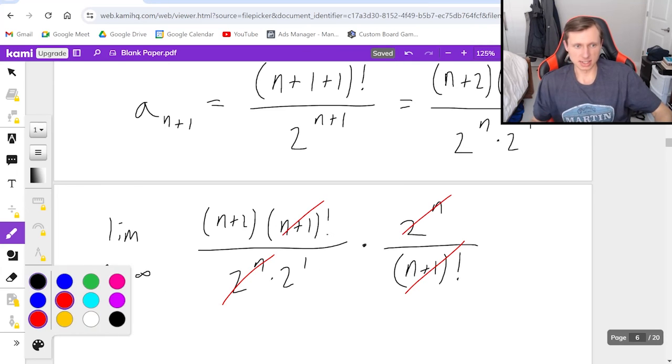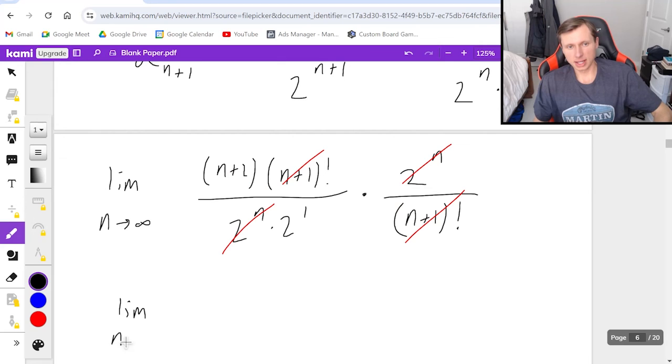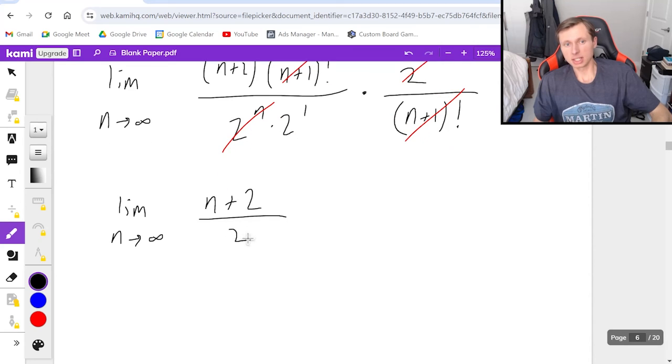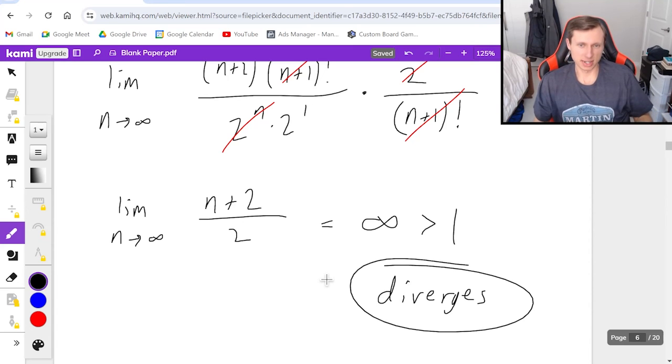And then we'll have the limit as n goes to infinity of n plus 2 divided by 2. This limit is going to go to infinity because the numerator degree is higher. And because we're getting infinity, and because this is definitely greater than 1, we just say that the series diverges by the ratio test. And there's our answer.